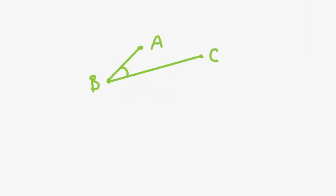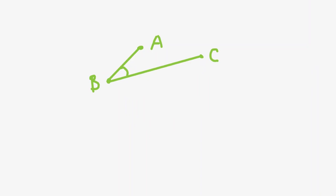To see how this works, take a look at this angle. Normally, angles are always positive, so if we move point A across line BC, the resulting angle is also positive.